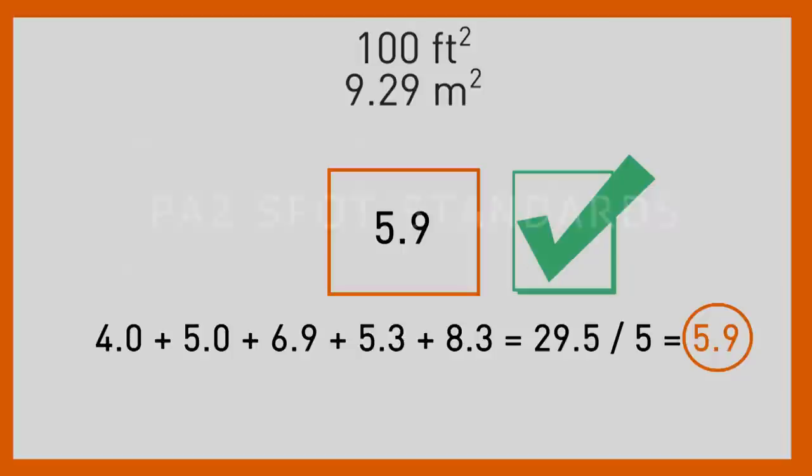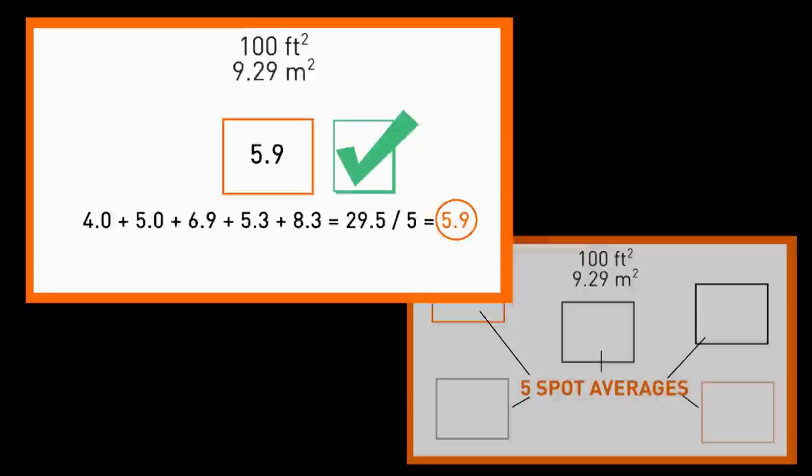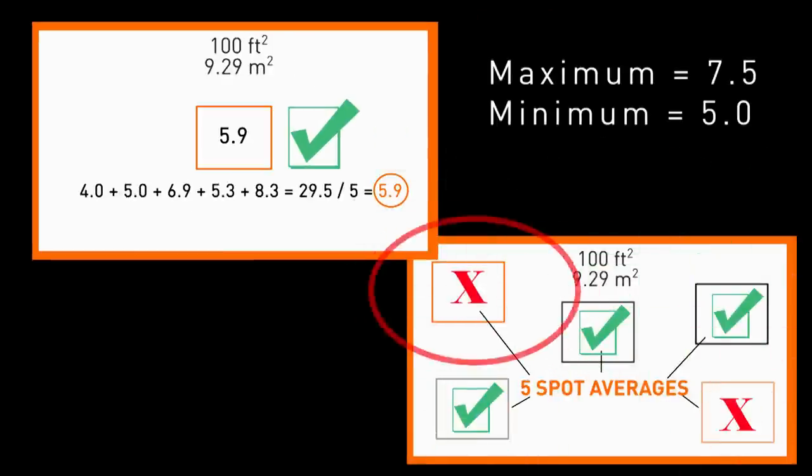Now, this is where it gets a bit confusing. As long as the 5 spot group average passes the spec, some of the underlying spot averages can actually be outside of the minimum 5 and the maximum 7.5 standards and still be acceptable.